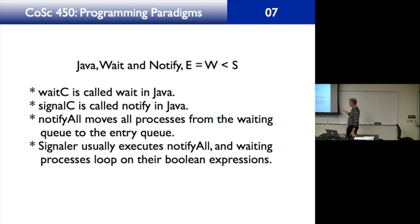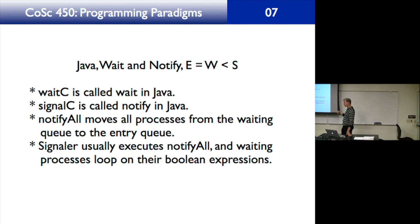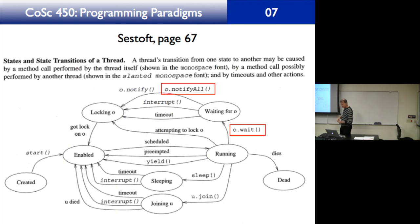Java is called wait and notify. E equals W less than S. For your last assignment you'll use Java monitors: wait(c) is called wait in Java and signal(c) is called notify in Java. You'll usually use notifyAll because it moves all processes from the waiting queue to the entry queue. The waiting processes loop on their boolean expressions to determine which one gets in.